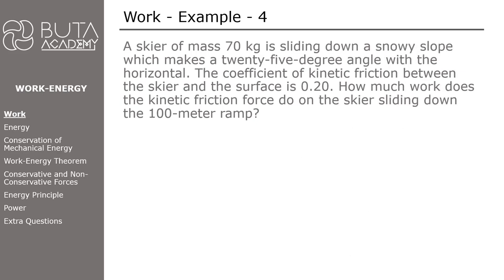In the second example, a skier of mass 70 kg is sliding down a snowy slope, which makes a 25-degree angle with the horizontal. The coefficient of kinetic friction between the skier and the surface is 0.2. How much work does the kinetic friction force do on the skier sliding down the 100-meter ramp?